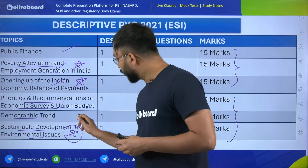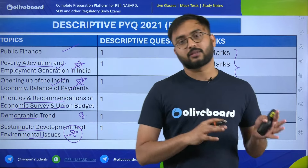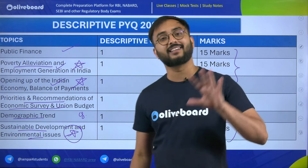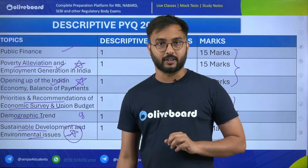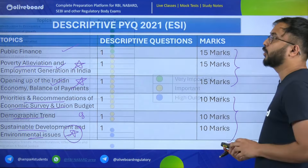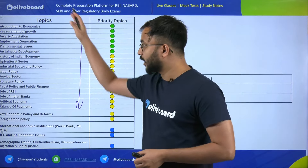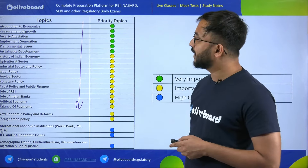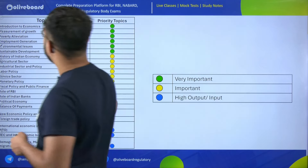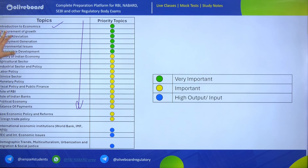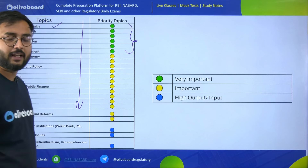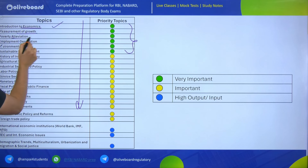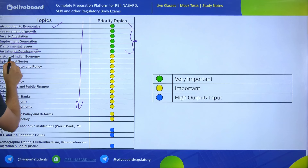Then the next yellow color topics, which are important, include: history of Indian economy, agriculture sector, industrial sector and policy, labor policy, service sector, monetary policy, fiscal policy and public finance, role of RBI, role of Indian banks, political economy, balance of payment, new economic policy and reforms, and foreign trade policy. These are a combination of macroeconomic and microeconomic topics — important, and they heavily repeat in descriptive or objective parts. But you can do these on second priority.